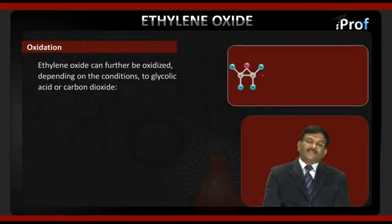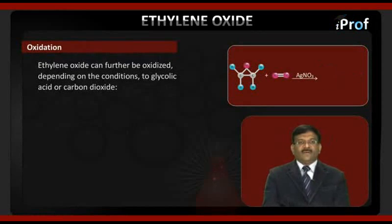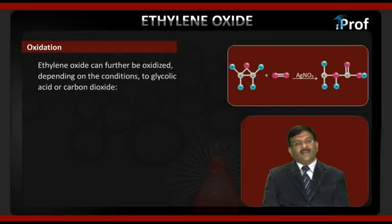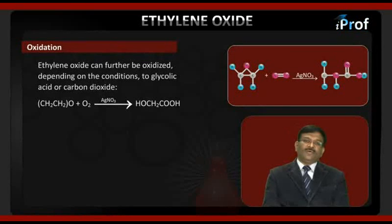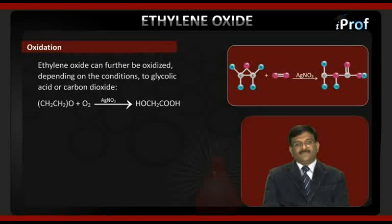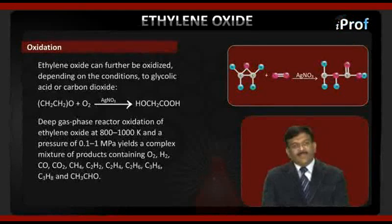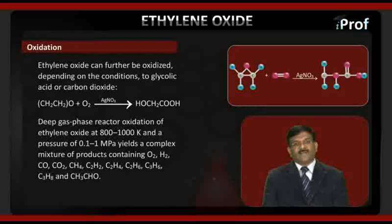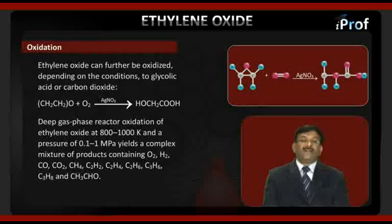Oxidation. Ethylene oxide can further be oxidized, depending on the condition, to glycolic acid or carbon dioxide. The reaction is: ethylene oxide plus O₂ in the presence of AgNO₃ (silver nitrate) gives H₂O plus COOH. Deep gaseous phase reactor oxidation of ethylene oxide at 800 to 1000 Kelvin and a pressure of 0.1 to 1 millipascal gives a complex mixture of products containing oxygen, hydrogen, carbon monoxide, carbon dioxide.